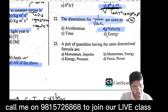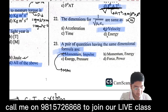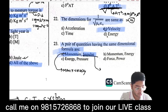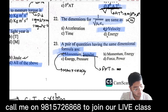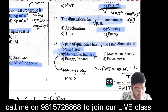The pair of quantities having the same dimensional formula: momentum and impulse. Momentum is mass × velocity. Impulse is force × time — force is M·L·T⁻² multiplied by T gives M·L·T⁻¹.